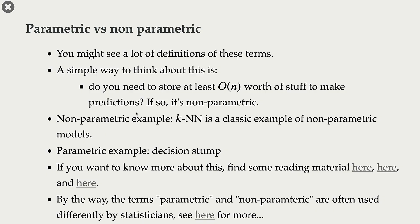For example, in case of KNNs, we don't do anything in fit — we just store all the examples. And so we need to store at least order of n worth of stuff. In case of Decision Stump, on the other hand, when you learn your model, you have this one feature and its threshold, and that's what you need to store to make predictions. You don't need to store anything else from your data. And so, Decision Stump is a parametric model.